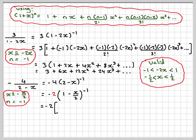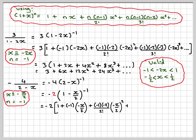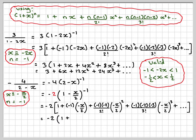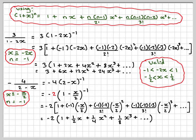So we have -2[1 + (-1)(-x/2) + ((-1)(-2))/2! · (-x/2)² + ((-1)(-2)(-3))/3! · (-x/2)³ + ...]. This simplifies inside the bracket to 1 + x/2 + x²/4 + x³/8. Multiplying through by -2 gives -2 - x - x²/2 - x³/4.